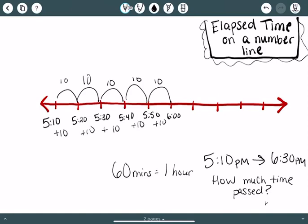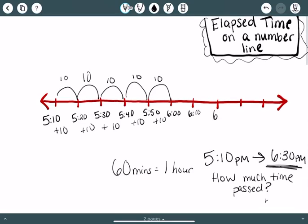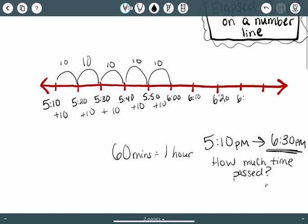6 o'clock, we're going to keep going. Remember we're trying to get to 6:30. So I'm going to keep going. Then I have 6:10, 6:20, and then 6:30 is where I'm ending up. And remember each time I jumped forward I jumped forward by 10 minutes.